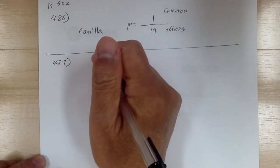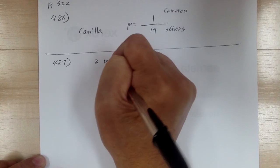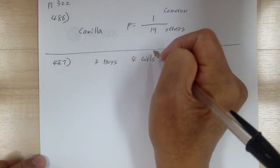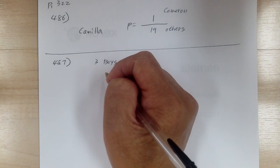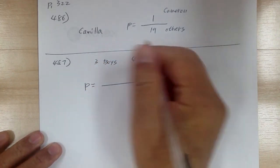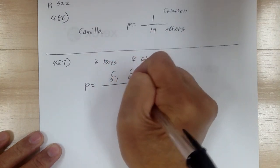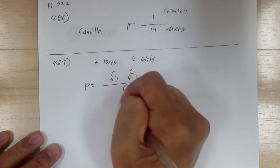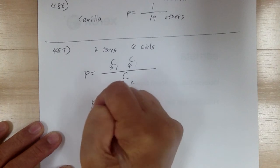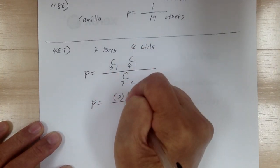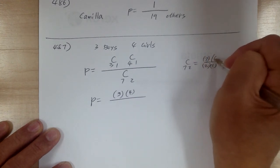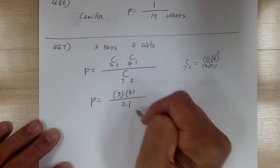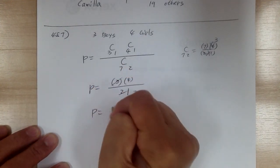Let's go to 487. There are three boys and four girls, and two are chosen to give a report. What's the probability that one boy and one girl are chosen? There are 3 boys choosing 1, and 4 girls choosing 1, over a total of 7C2. So 3C1 is 3, 4C1 is 4, and 7C2 equals 21. Cancel and the probability equals 4 over 7.